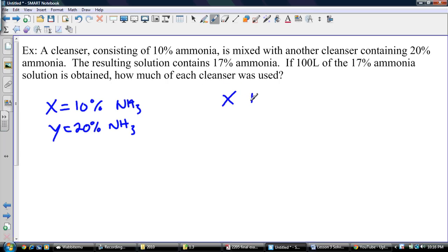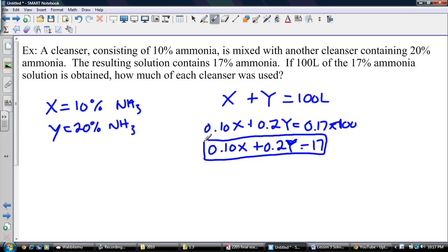So we know X ammonia plus Y ammonia equals 100 liters. So that's my first equation. We also have 0.1 times X plus 0.2 times Y is going to be equal to 0.17 times 100. So that means 0.1X plus 0.2Y is equal to 17. So these are my two equations to solve. Again, we can solve these by substitution.